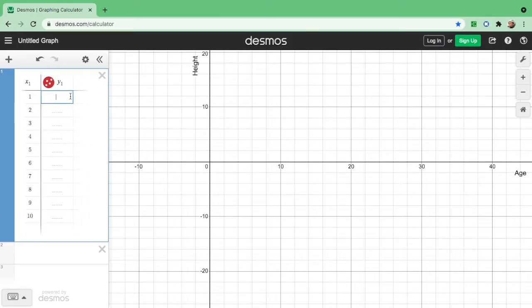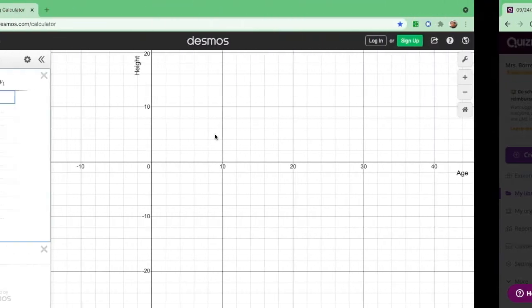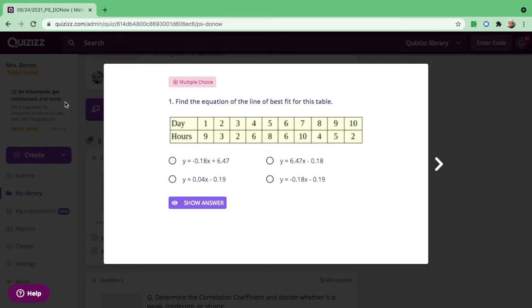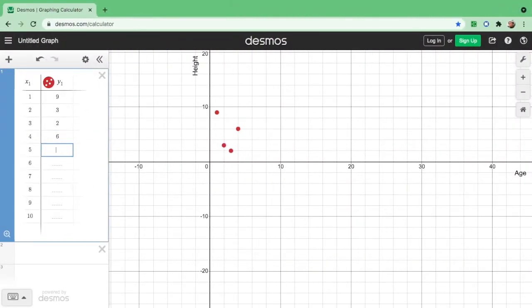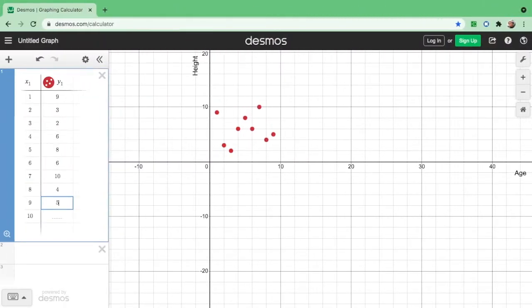And the corresponding value of y, we have 9, 3, 2, 6, 9, 3, 2, and 6, 8, 6, 10, 4, 8, 6, 10, and 4. And we have 5 and 2.